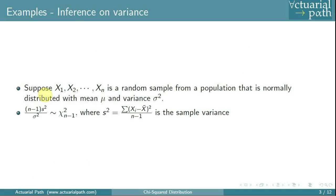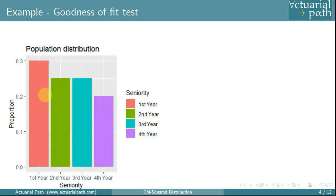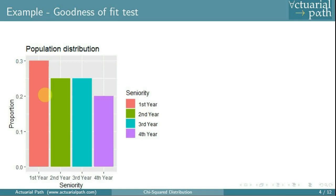Another example where the chi-squared distribution is helpful is the goodness of fit test. Suppose you are a college student conducting a study and you want a good representation of the student body by seniority. If your college has 30% first year, 25% second and third year, and 20% fourth year students, from a population of 20,000, you draw a random sample of 500. The chi-squared distribution can help you determine whether there is statistical evidence that your sample is not representative of the population it is drawn from. This popular test is called the goodness of fit test.